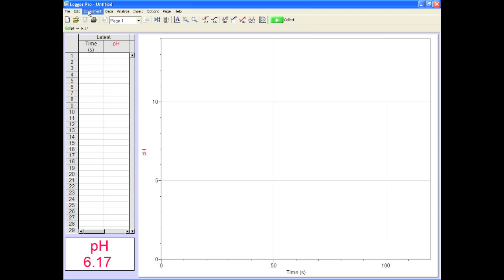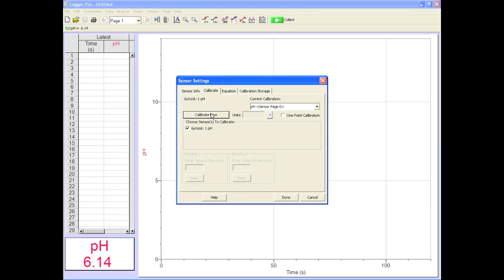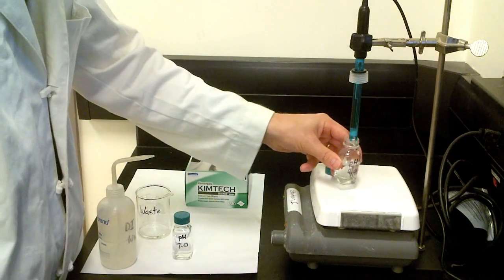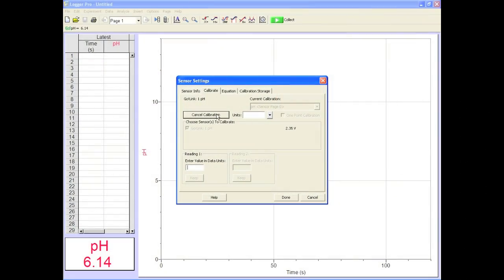Back to Logger Pro. Click on experiment, calibrate, pH. Start the calibration and place the probe in one of the pH standards. Shake it up to get all those H plus signs moving around. Don't just hold it there like a lame duck, that's not gonna work.